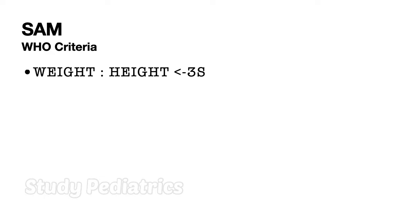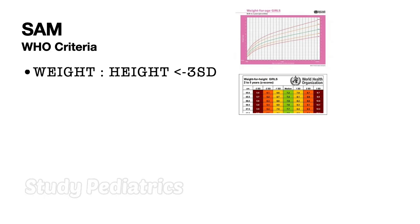SAM stands for severe acute malnutrition. It is one of the major health burdens in developing countries as per WHO. SAM can be diagnosed by using four criteria. The first is weight-to-height ratio: if less than minus 3SD, it indicates SAM. It is the most important criteria and is calculated using WHO standard growth charts.